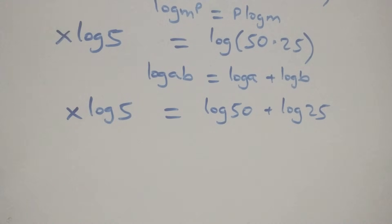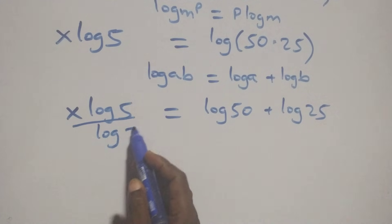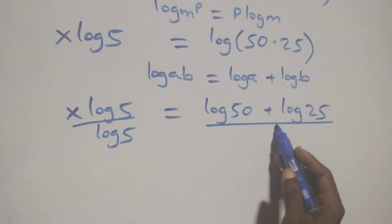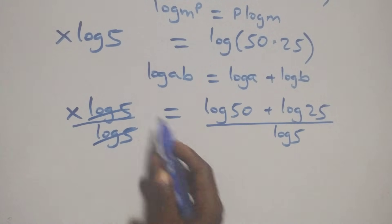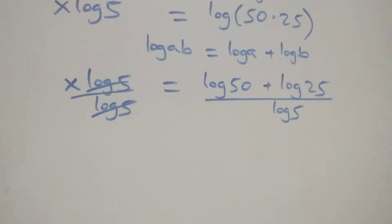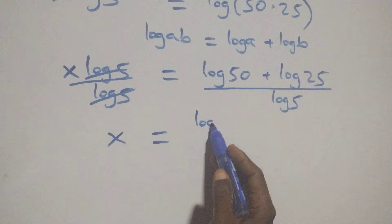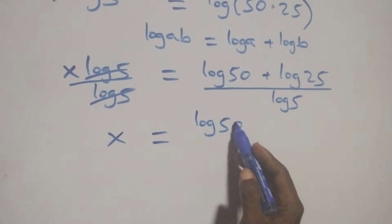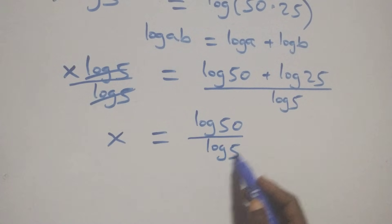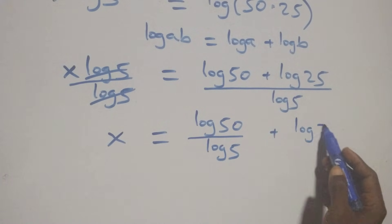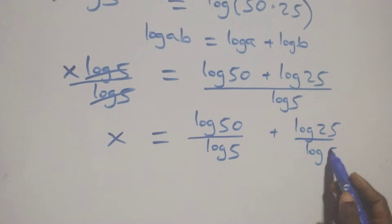We divide both sides by log 5. Dividing this side and also this side by log 5 — log 5 cancels with each other — and we have x equals log 50 over log 5 plus log 25 over log 5.